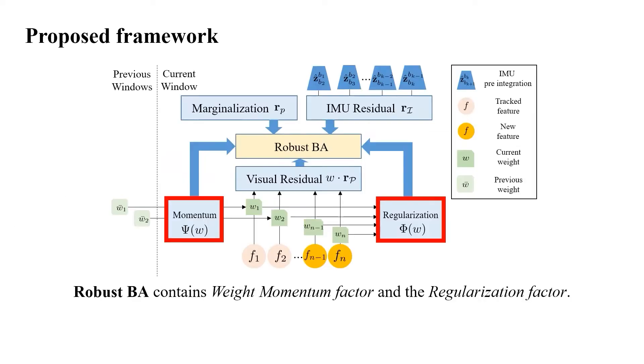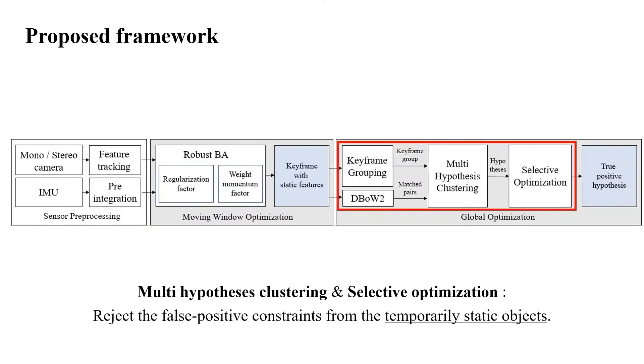In the robust BA process, we adopt the weight momentum factor and the regularization factor. With those two factors, the effects of the features from the dynamic objects can be minimized. After the robust BA process, multi-hypothesis clustering-based selective optimization is proposed to reject the false positive constraints from the temporarily static objects.